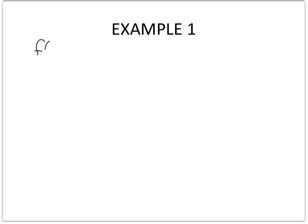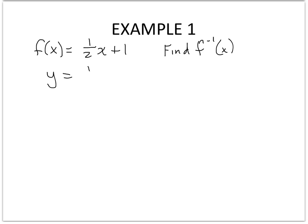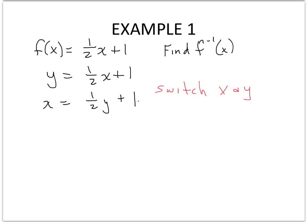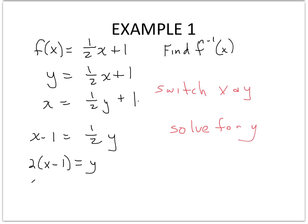If you had f(x) equals one-half x plus 1 and I want to find the inverse of f(x), the first thing we do is change f(x) to y, then switch x and y. So I'm going to have x minus 1 equals one-half y, and then multiply both sides by 2 and I get my inverse. Typically we write that y as f inverse of x.